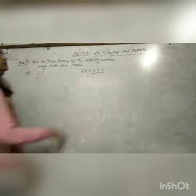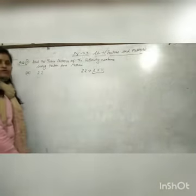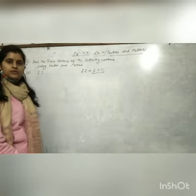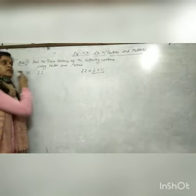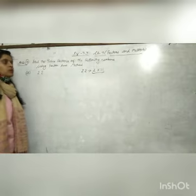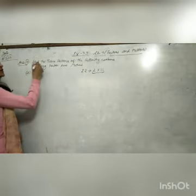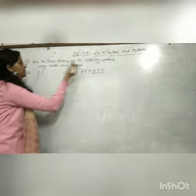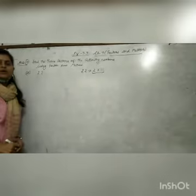Today we are doing Chapter 7, Factors and Multiples. We are going to start Exercise 7.3, question number 7: find the prime factors of the following numbers using the factor tree method.